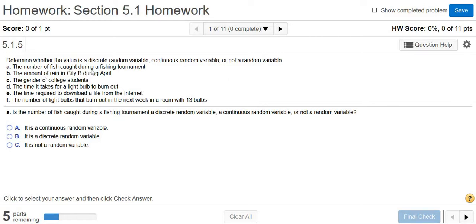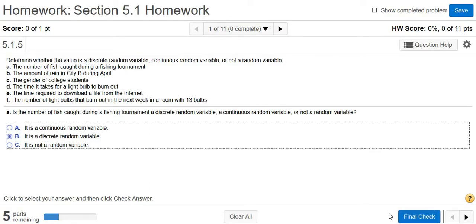So A, the number of fish caught during a fishing tournament. So number of fish, that's a whole number. You can count the number of fish. So I would say it's discrete. Let's try it.